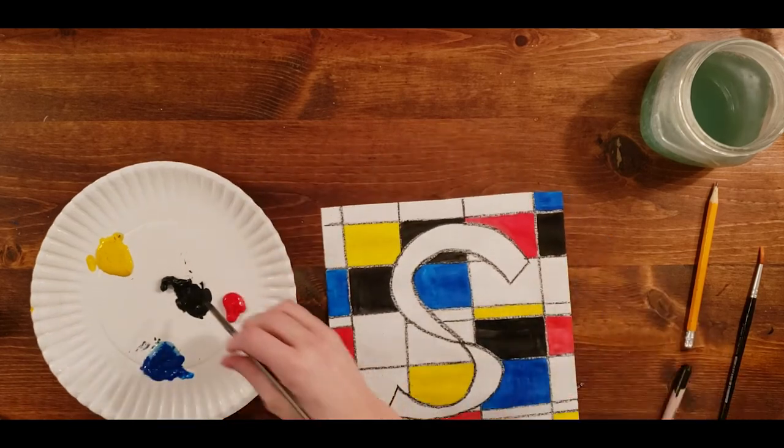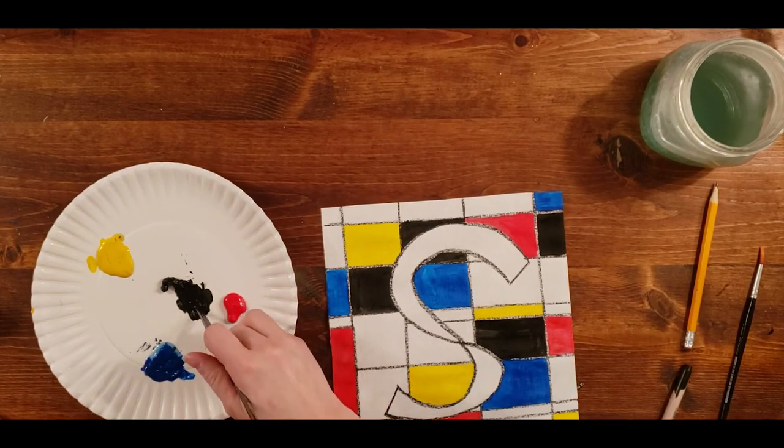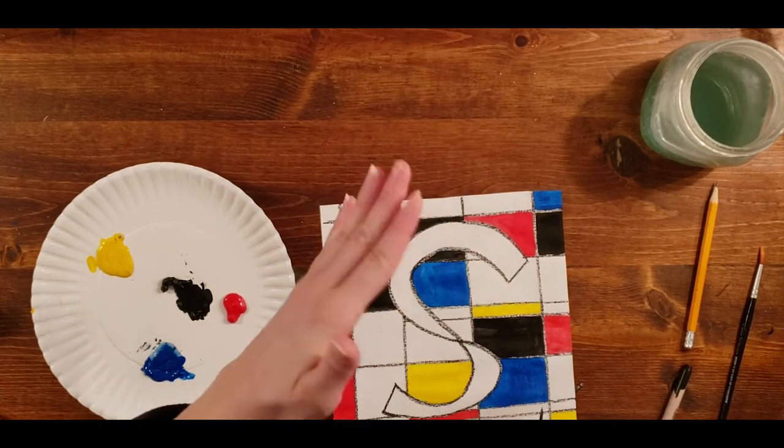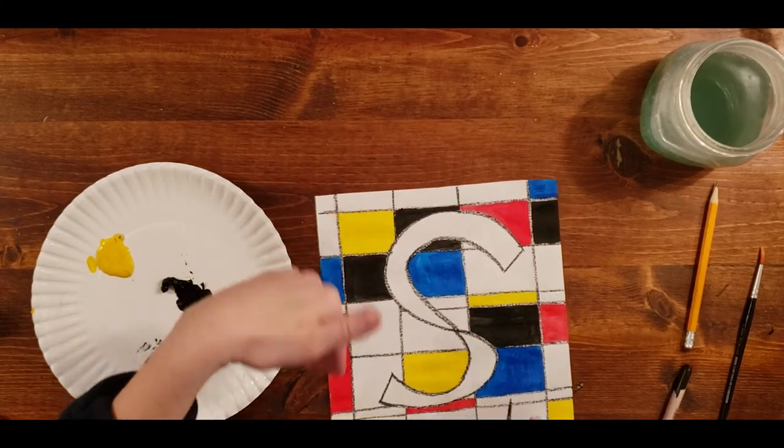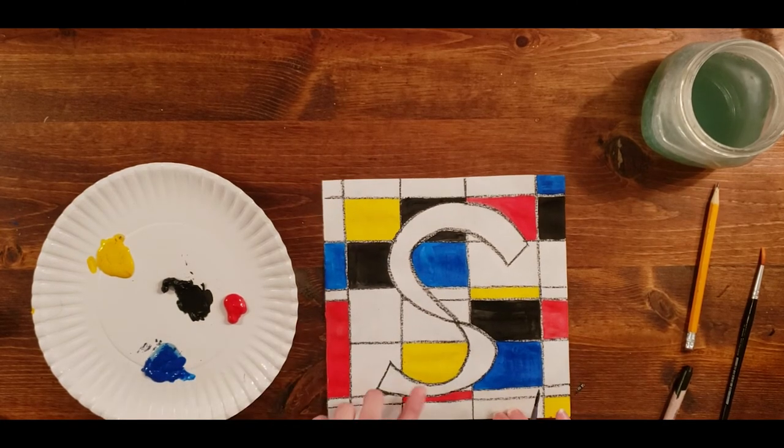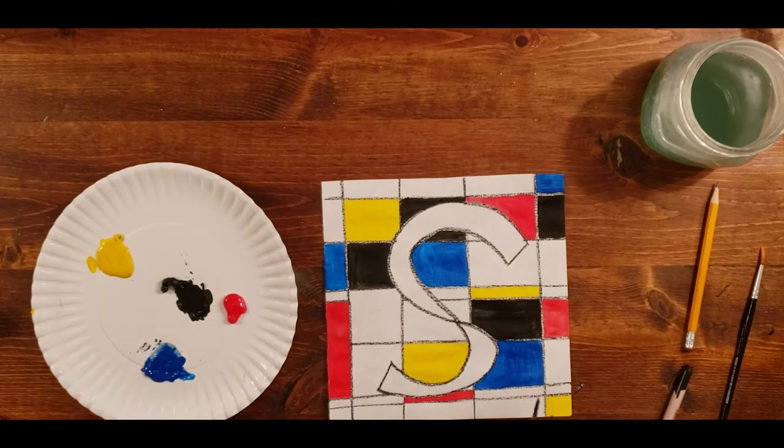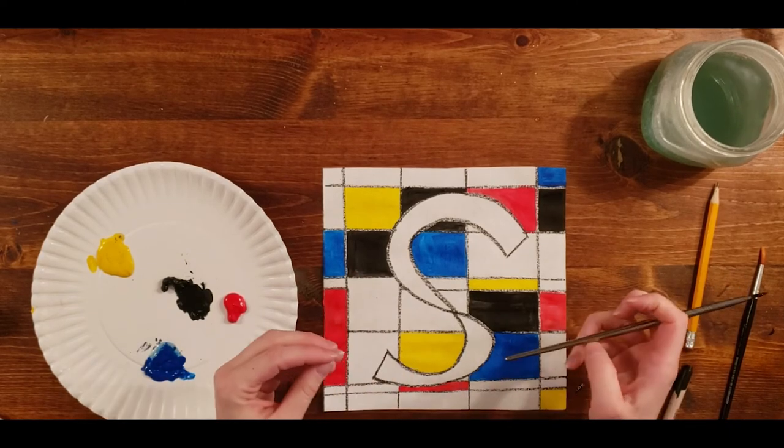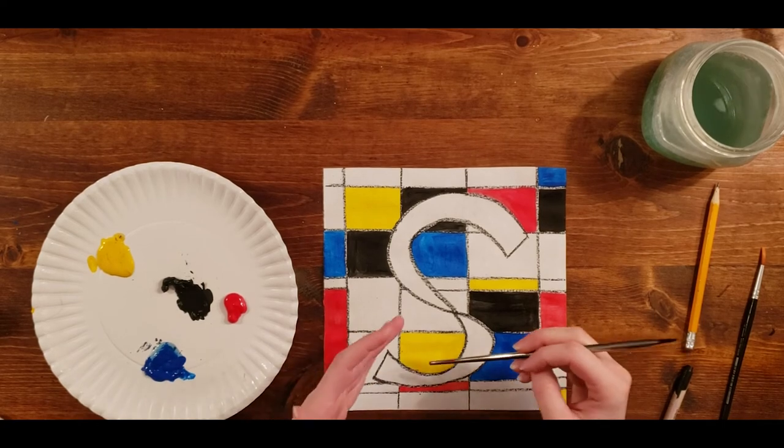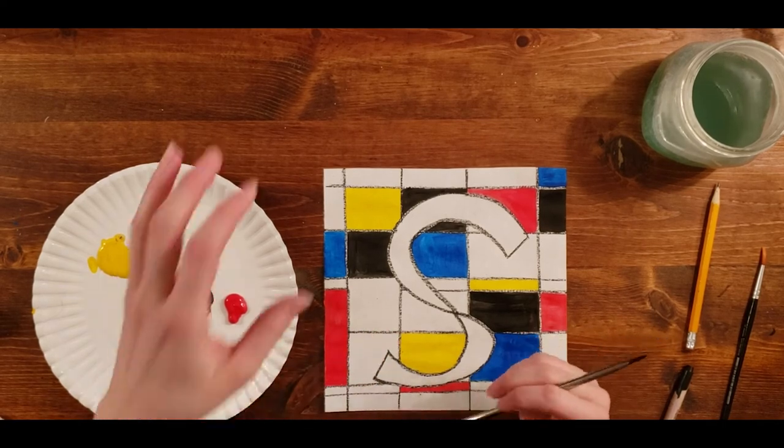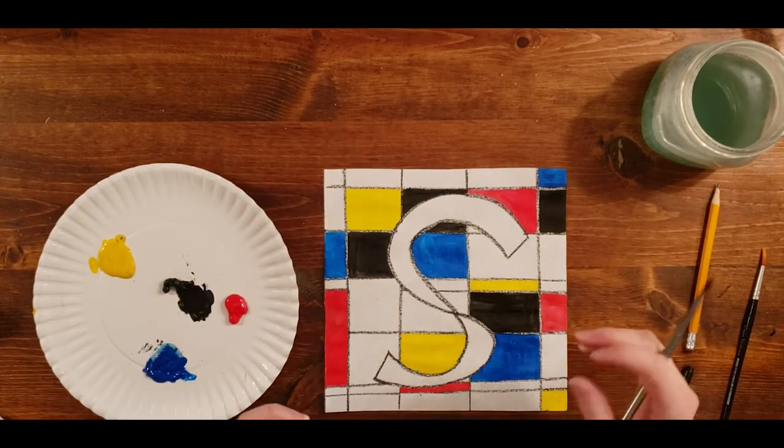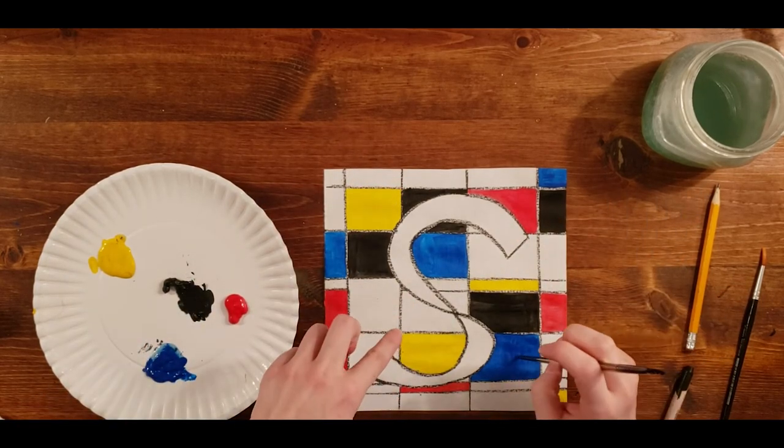If you've ever done a color wheel, you know you start with the primary colors and then as you go around, you have the secondary colors. Then you have tertiary colors and it goes on and on and on. So primary is the beginning. It's first. These are our first colors. We cannot make these by themselves. You know, yellow is yellow. Yellow doesn't come from mixing other colors together. Yellow is yellow. Same with red and blue.